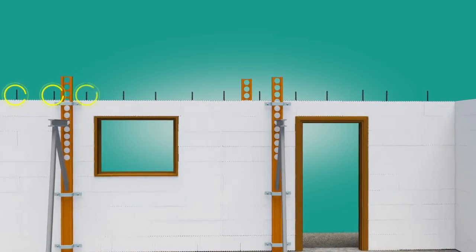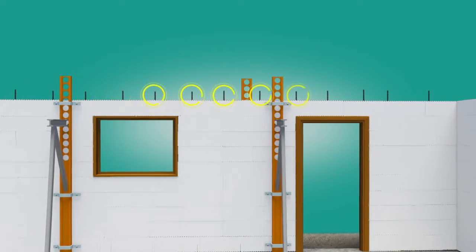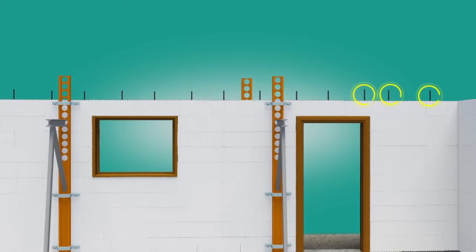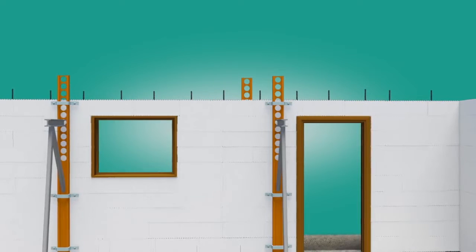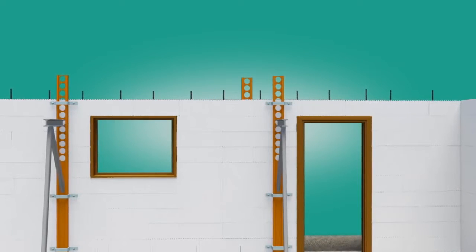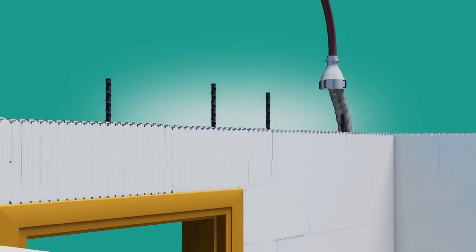Stack the block to the full wall height for single-story construction or just above floor height for multi-story construction. Begin installing vertical rebar from the opening at the top of the wall through the spaces between the horizontal rebar.